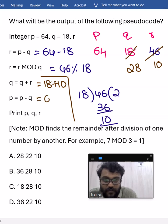Now you have to print p, q, and r values. That is nothing but 36, 28, and 10. In the question itself they have given what is mod, okay? Find the remainder.